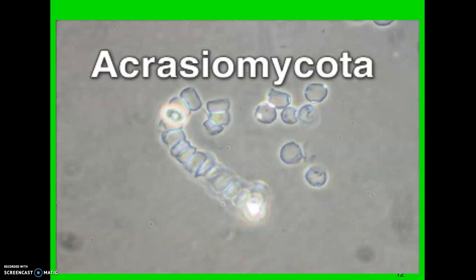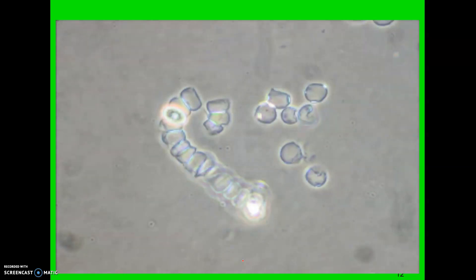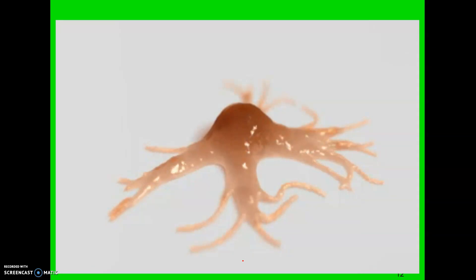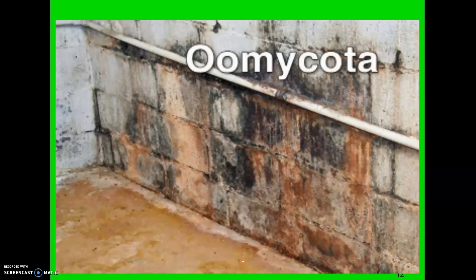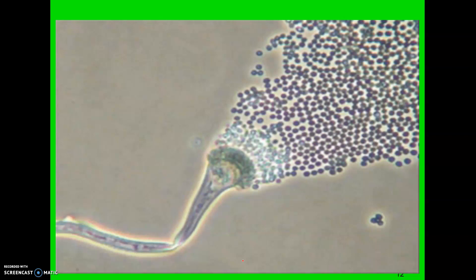Cellular slime molds in the phylum Acrasiomycota live in fresh water, moist soils, or on decaying plant matter. In what's called the feeding stage of their life cycle, they move around as individual amoeboid cells. When food becomes scarce, the cells congregate, forming a mass called the pseudoplasmodium. This structure is capable of producing haploid spores. The haploid spores, under favorable conditions, generate amoeboid cells, starting the feeding stage all over again. A third group of fungus-like protists are in the phylum Oomycota — they include water molds and downy mildews, and consist of finely branched single-cell filaments. They differ from true fungi in their cellular composition, life cycle, and sexual mode of reproduction.